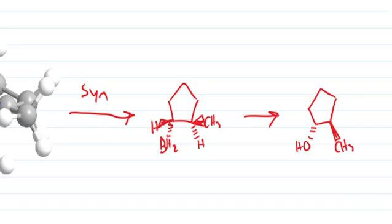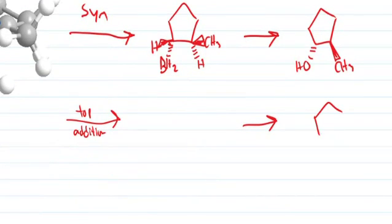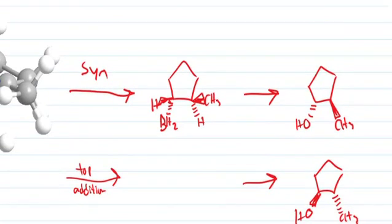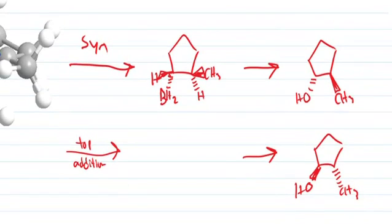And so we end up with opposite orientation of the methyl and the OH because of the syn addition. But if we add it from the top, you end up with the enantiomer product. Because the additions are reversed. Okay, still a syn addition, but the additions are reversed.